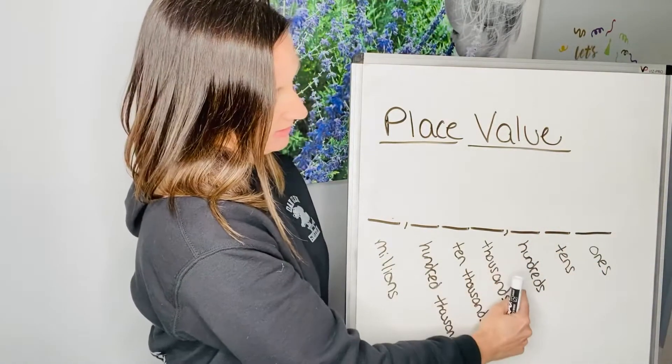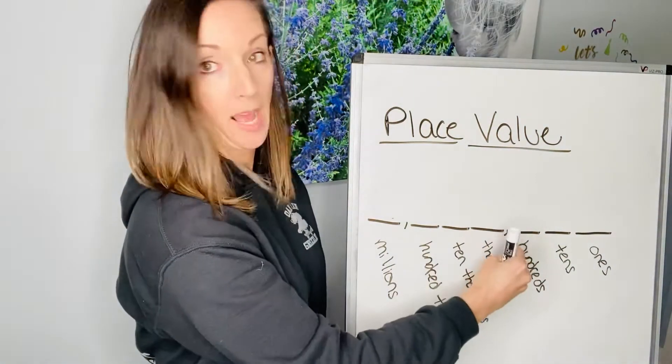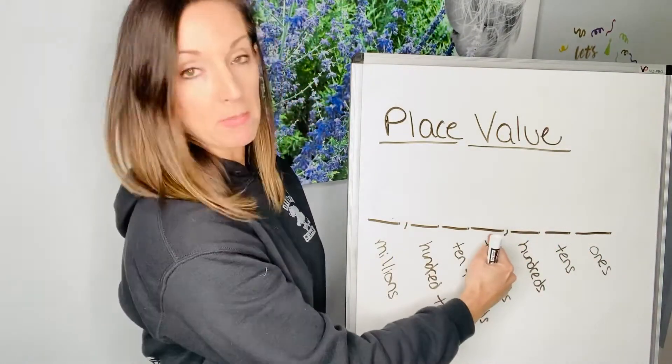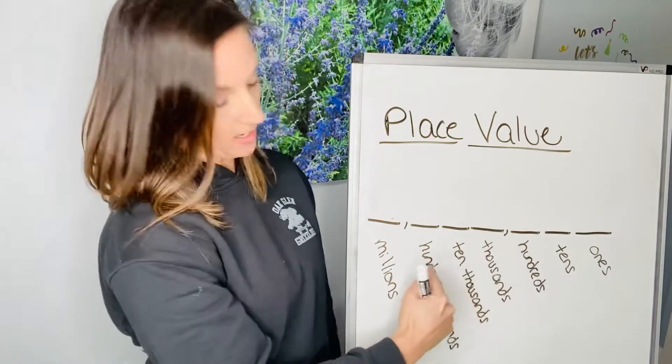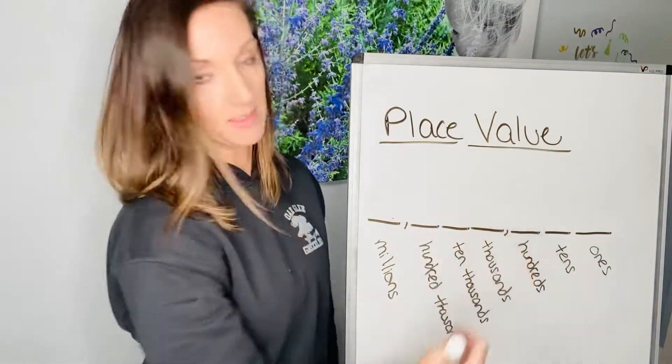We have hundreds, and then we have a comma. So every three digits in a big number, there's a comma. Ones, tens, hundreds, then we have thousands, then ten thousand, hundred thousand, then million. Notice we have two commas in this number.